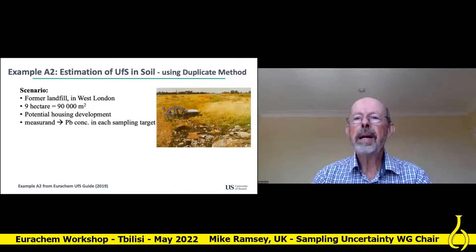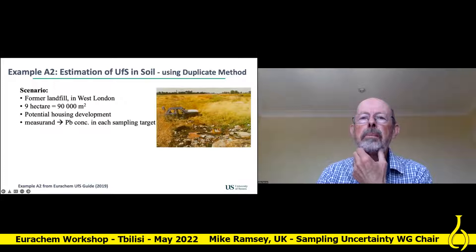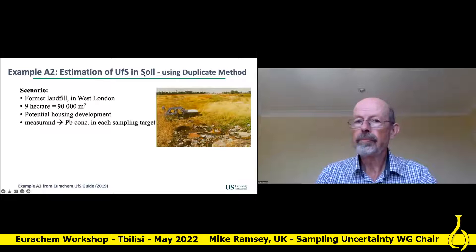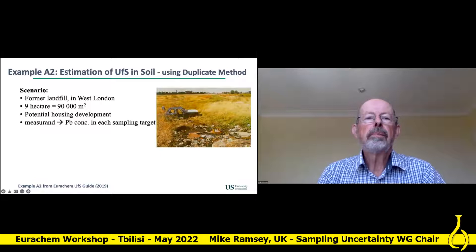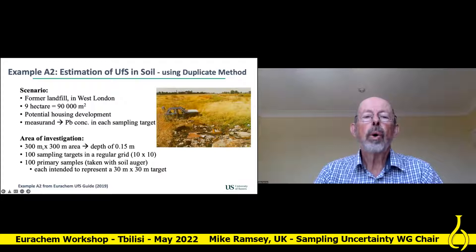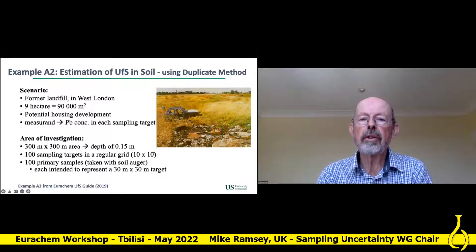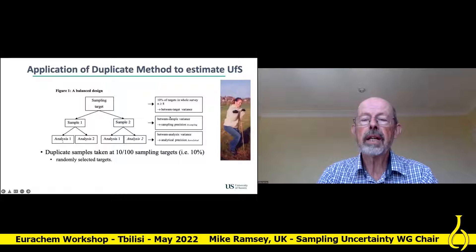The best way to explain this is with an example taken from the Eurochem guide, where we use the duplicate method to estimate the uncertainty from sampling in soil. This is a former landfill in West London, near Heathrow, for potential housing development. The measurand is the total lead concentration in the sampling target. The area of investigation is a 300 by 300 metre area with a depth of 15 centimetres. We defined 100 sampling targets across the area in a regular 10 by 10 grid, and 100 primary samples were taken with an auger intended to represent each of these targets.